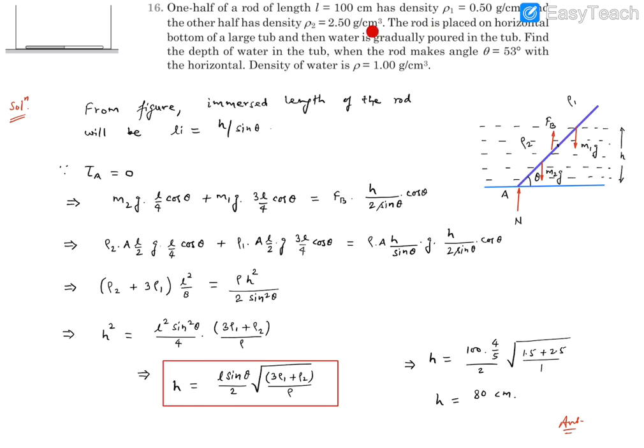Now these numbers are known to us, we can put the values and get our answer. So L is 100 cm and sin θ, that means sin 53 will become 4 by 5 divided by 2 under root. Density 1 is 0.5 into 3, so 1.5. Density 2 is 2.5 divided by density of water which is 1.